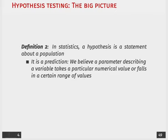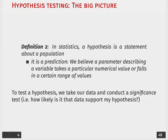A little bit more specifically, when we've been talking about estimators and parameters, a hypothesis is going to be a statement about some population. It's a prediction that we have that a parameter is describing this variable and it takes on a particular value that falls within a certain range of values. So essentially, in order to see whether or not our hypothesis is correct, we want to conduct a significance test — that is, how likely is it that the data in our sample supports the hypothesis that I generated from my theory.